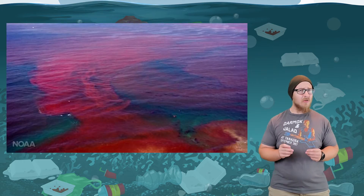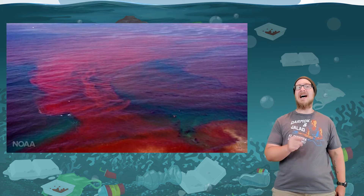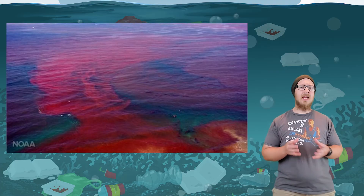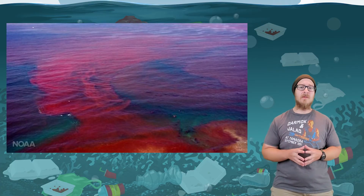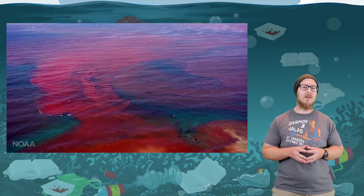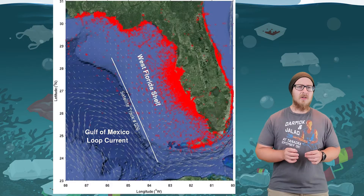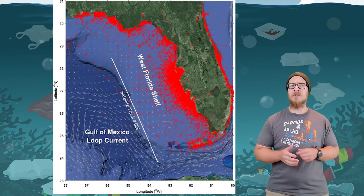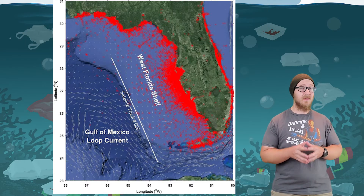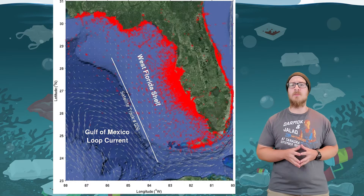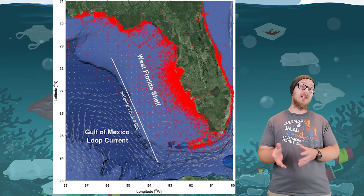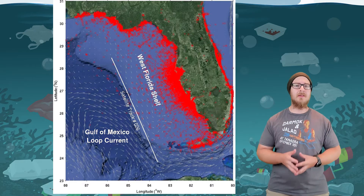Some algal blooms, however, are also toxic. Red Tide is an example of an algal bloom that contains species of algae that produce harmful toxins. This occurs quite frequently around the coast of Florida, and it leads to human health impacts, especially for those with respiratory problems. These blooms are also toxic to marine life, resulting in their death.